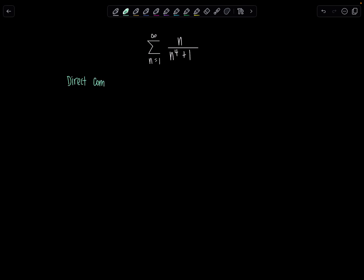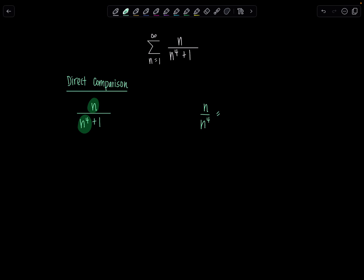So why did I think of that? I'm looking at the numerator and the highest degree of n that I see there is n to the 1st. I'm looking at the denominator — highest degree of n I see there is n to the 4th. And that can simplify to a nice convergent p-series, and I'm able to show the inequality necessary. I have n over n to the 4th plus 1, and focusing on n and n to the 4th, that was giving me vibes of 1 over n cubed.